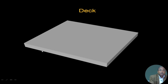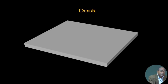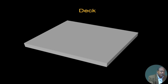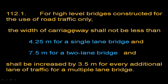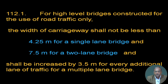The deck takes care of all loads: vehicles, pedestrians on the footpath, and the crash barrier. For high-level bridges constructed for road traffic only, the width of carriageway shall not be less than 4.25 meters for a single-lane bridge and 7.5 meters for a two-lane bridge.